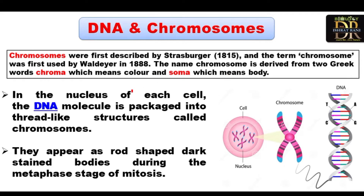In the nucleus of each cell, the DNA molecules are packed into a thread-like structure called chromosomes. You can see the chromosomes in the nucleus, and chromosomes are composed of DNA. They appear as rod-shaped, dark-stained bodies during mitosis, specifically at the metaphase stage, where you can clearly see the chromosomes.